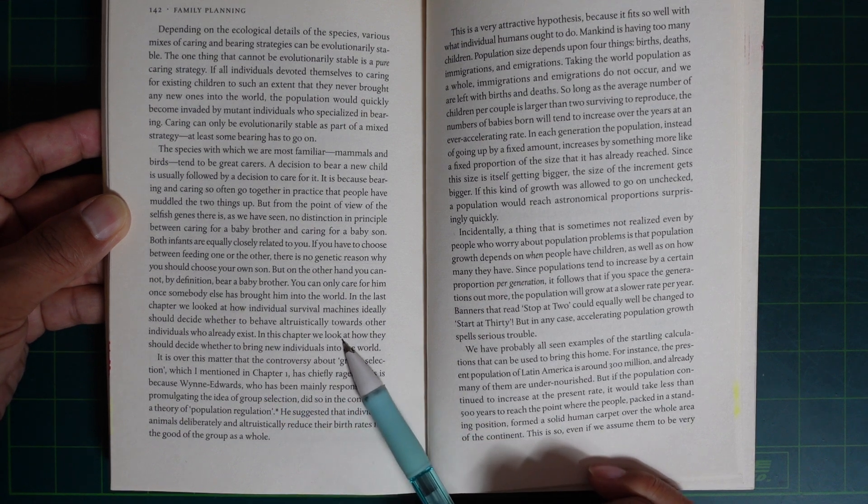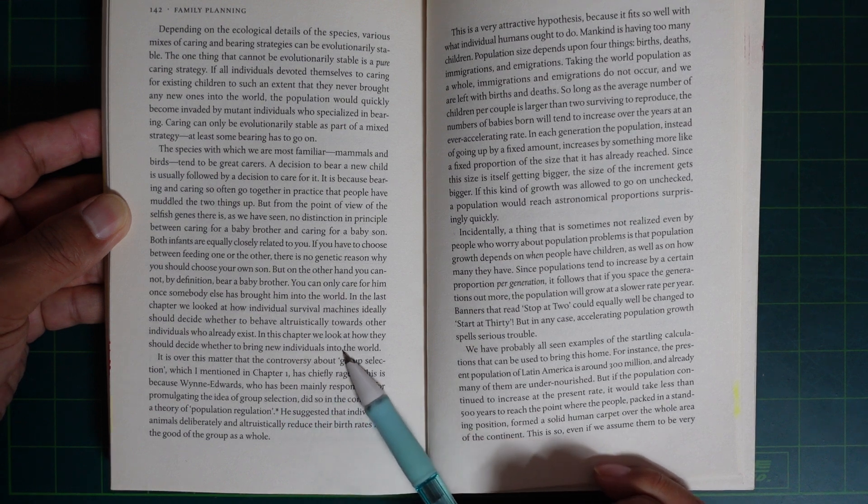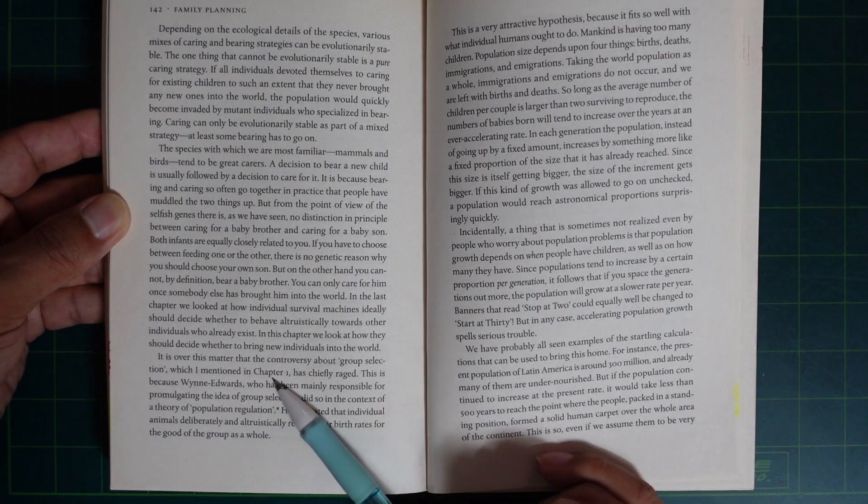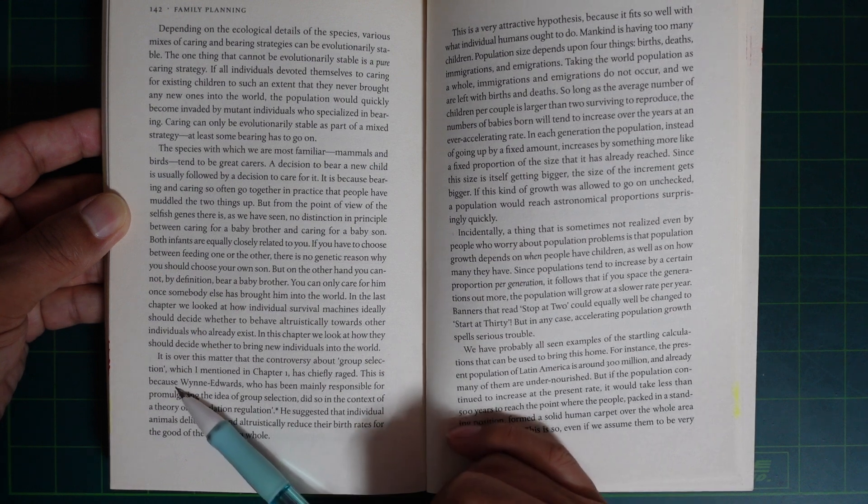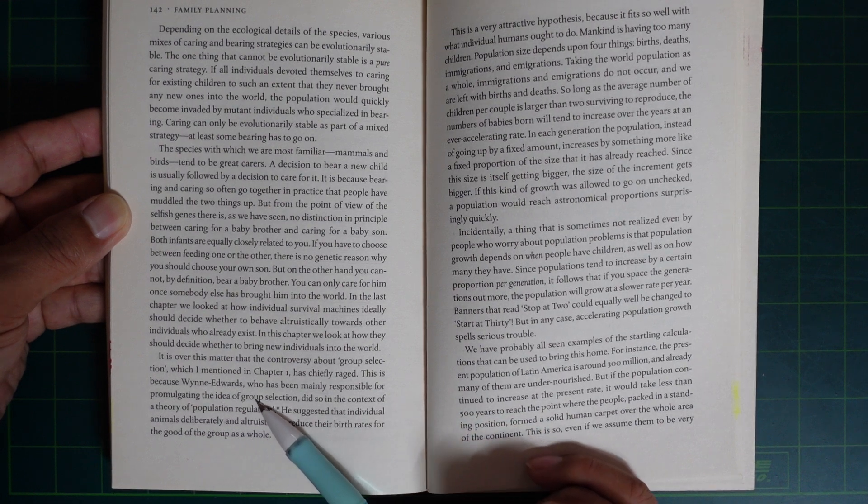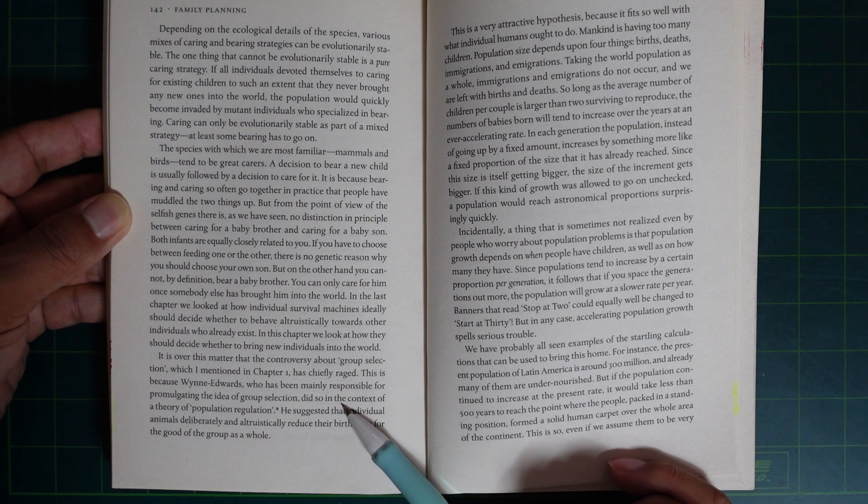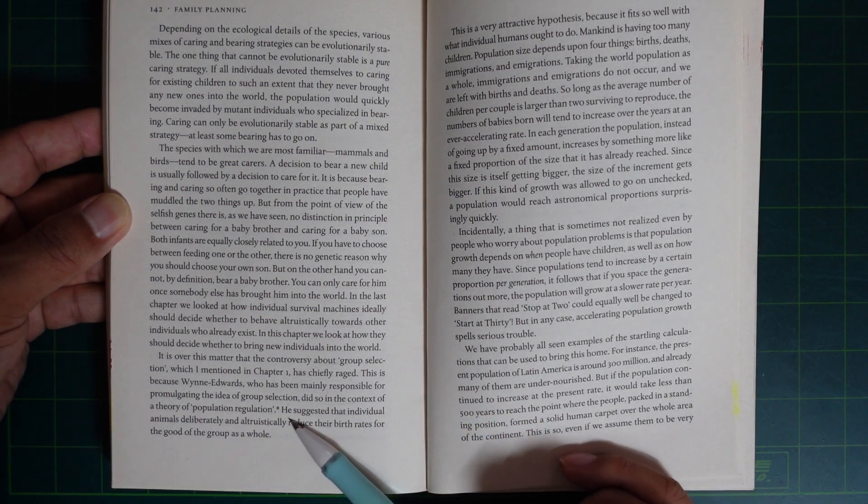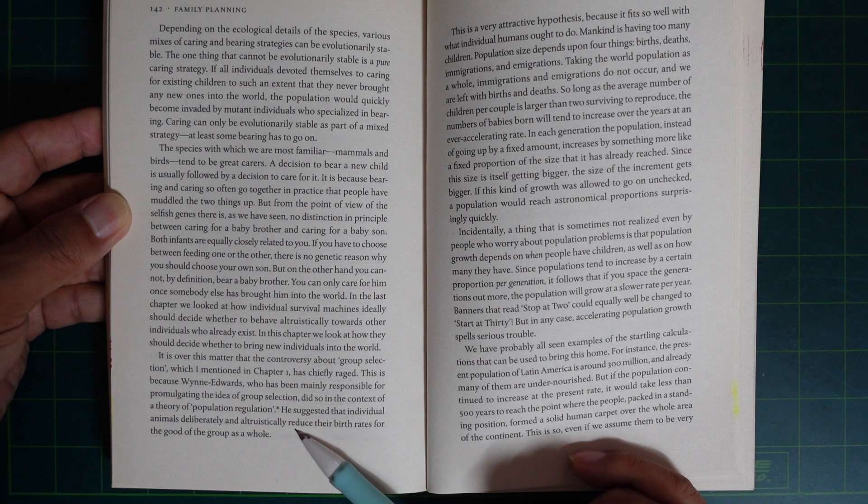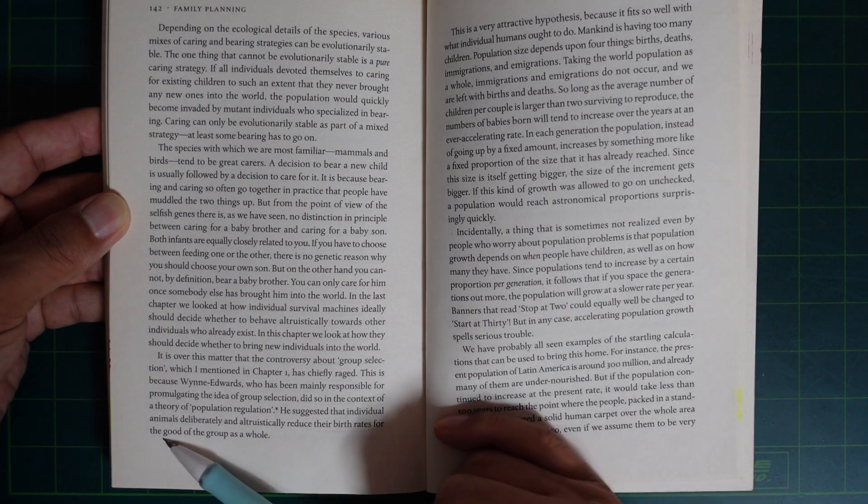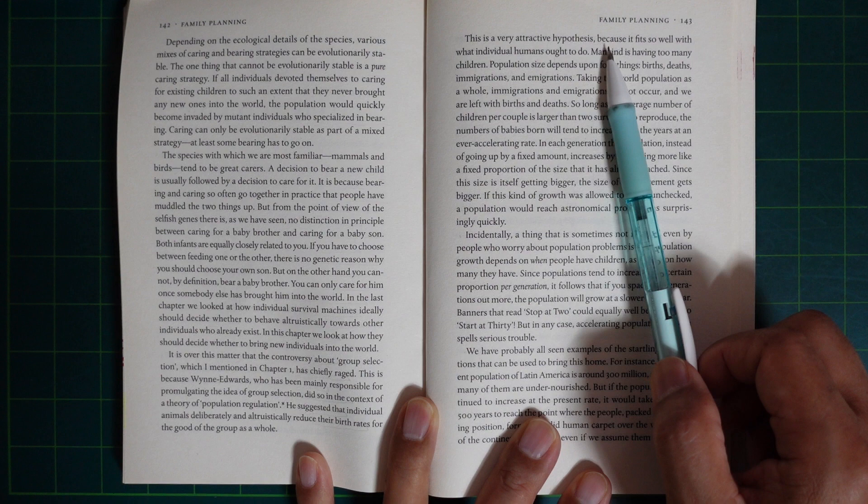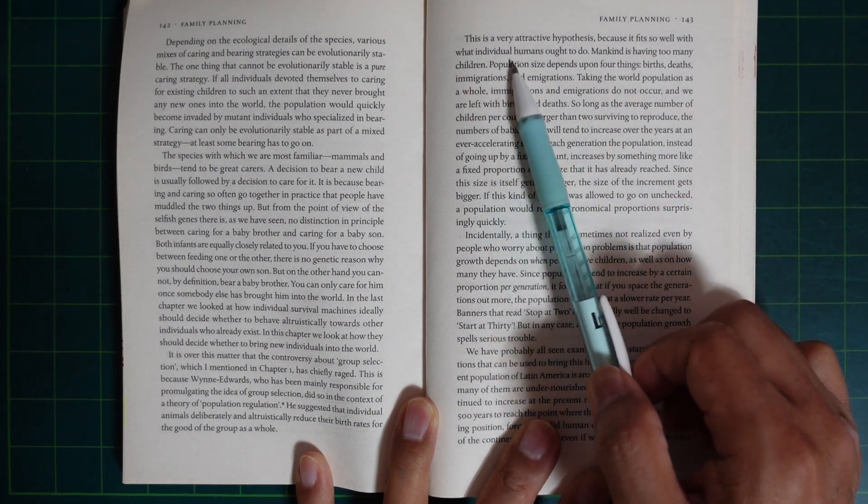In the last chapter, we looked at how individual survival machines ideally should decide whether to behave altruistically toward other individuals who already exist. In this chapter, we look at how they should decide whether to bring new individuals into the world. It is over this matter, the controversy about group selection, which I mentioned in chapter 1, has chiefly raged. This is because Wynne-Edwards, who had been mainly responsible for promulgating the idea of group selection, did so in the context of the theory of population regulation.